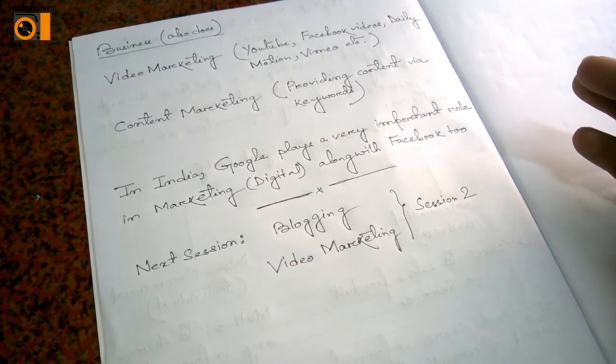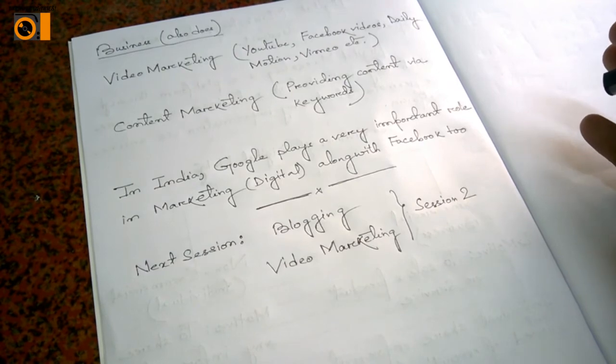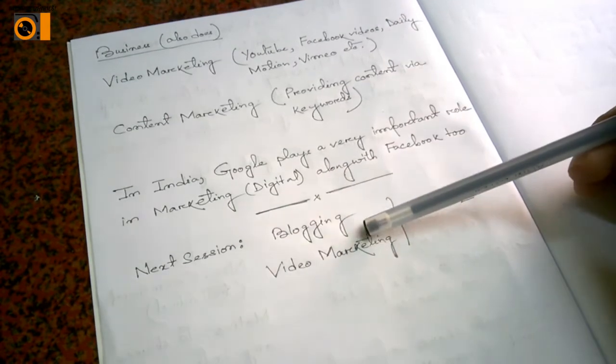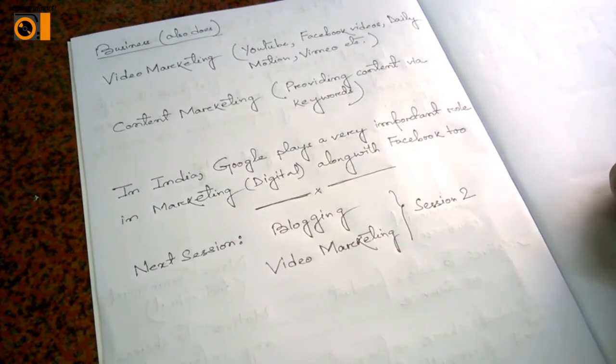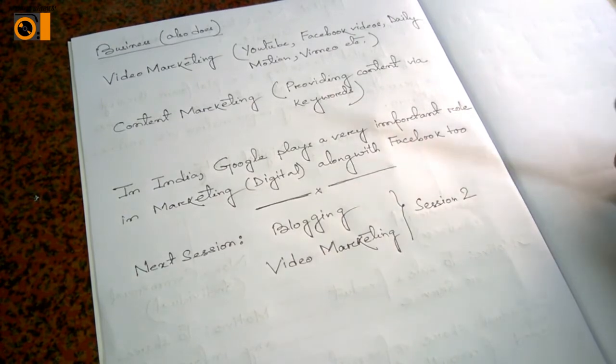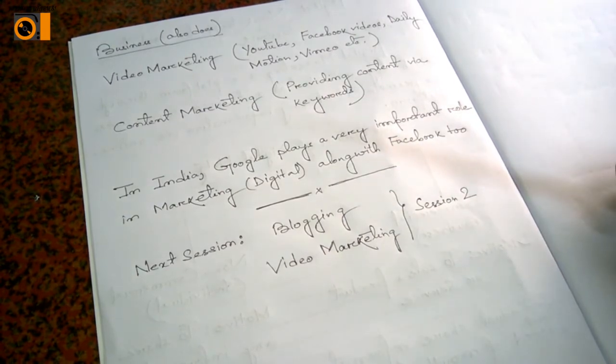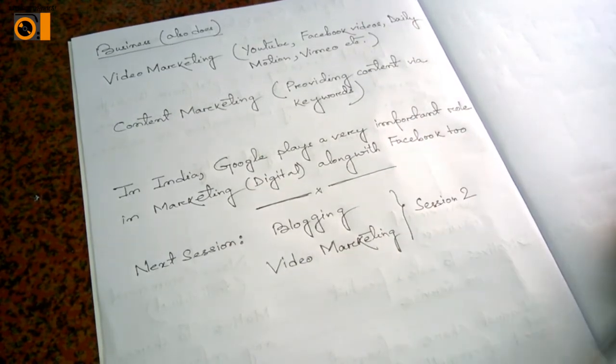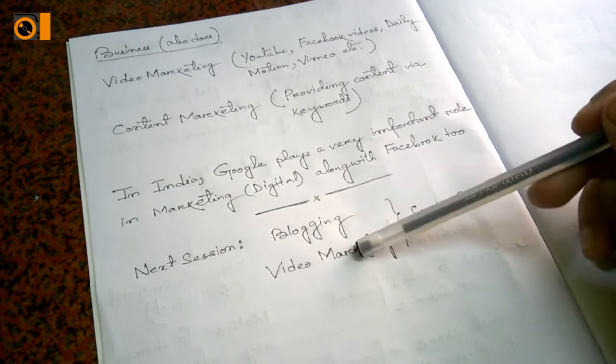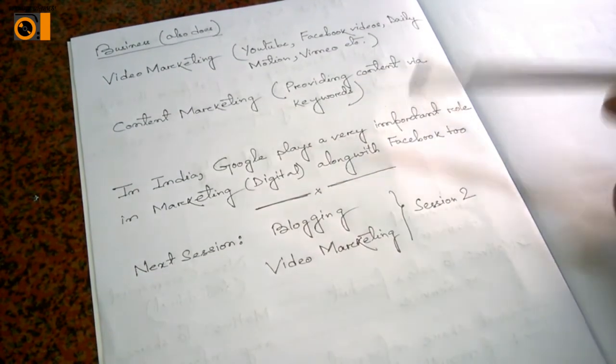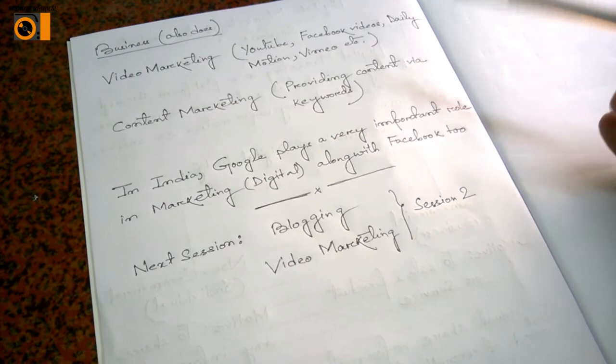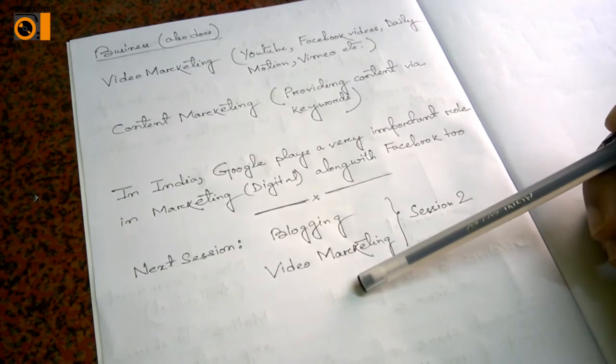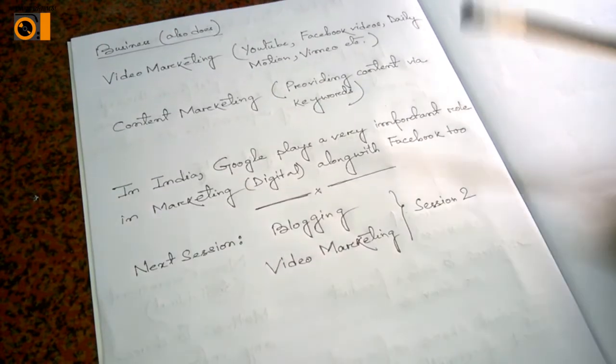So this is how I wrap up session one today. It was just an introduction. In next session you will be finding blogging and video marketing in a more described manner. I'll be telling you how to create a blog, how Google helps in blogging and video marketing, how you can create a YouTube channel. And these two things can provide you an earning perspective for individuals, and for businesses definitely it creates an earning perspective.